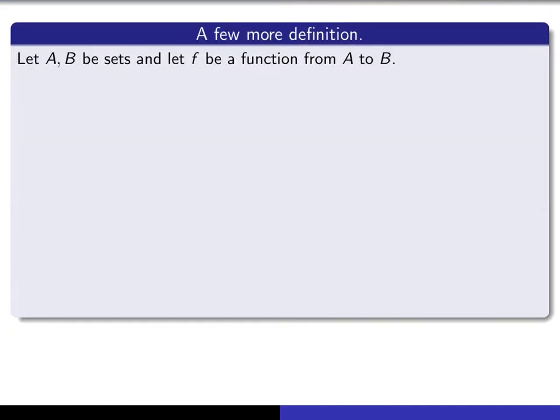We give a few more general definitions. Suppose we have two sets A and B, and f is a function from A to B. Then we abbreviate the statement that f is a function from A to B with this notation here. So when you see this, you should read it as f is a function from A to B. This is actually a sentence.